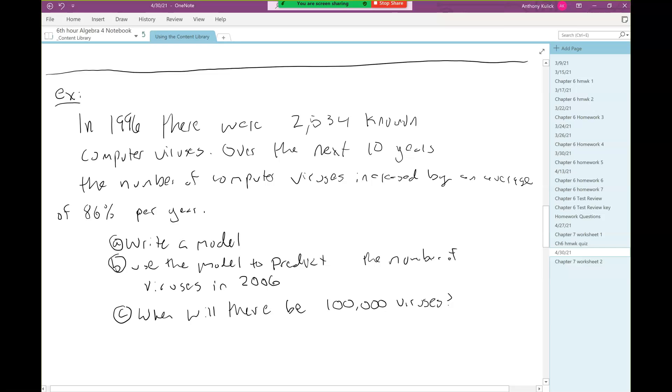Let's look at some examples. Our first example says in 1996 there were 2,534 known computer viruses. Over the next 10 years the number of computer viruses increased by an average of 86 percent per year. We're asked to write a model to describe the situation.